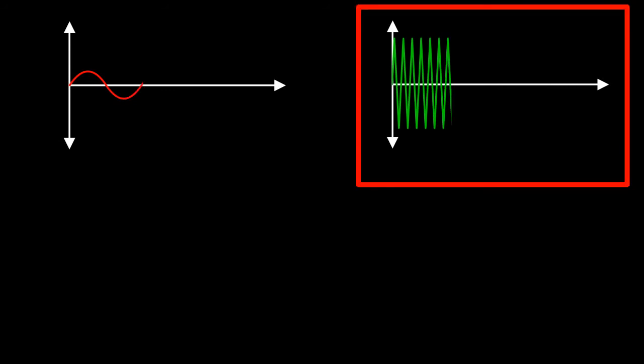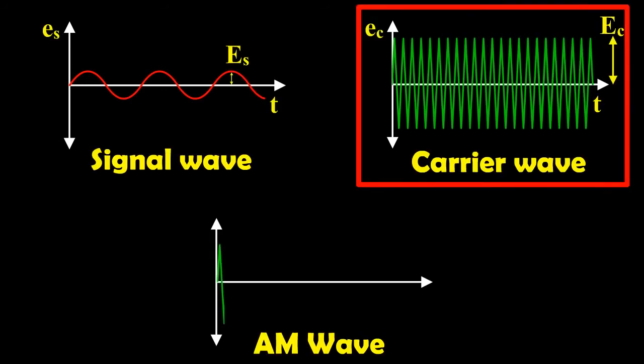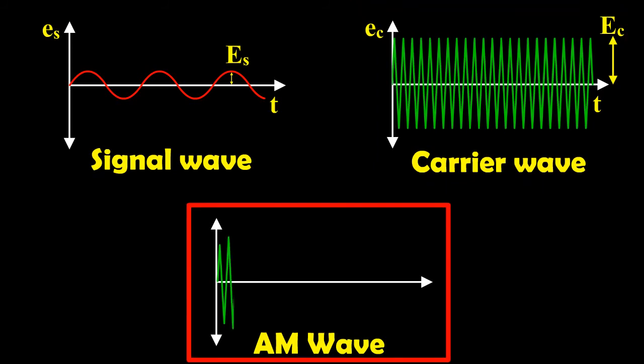What is amplitude modulation? That is AM. When the amplitude of high frequency carrier wave is changed in accordance with the intensity of the signal, this process is called amplitude modulation.